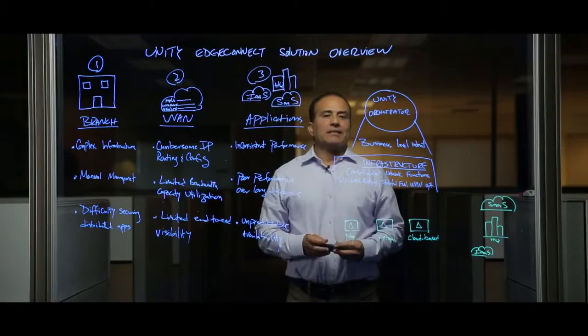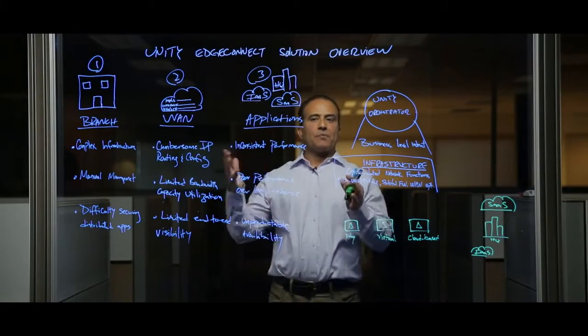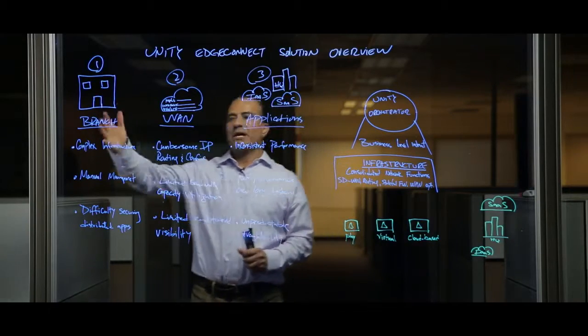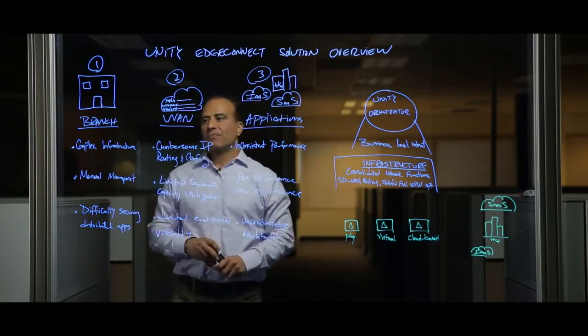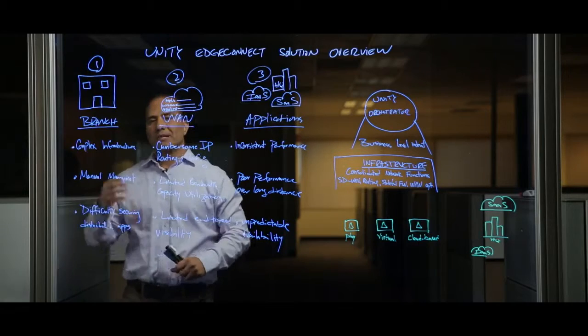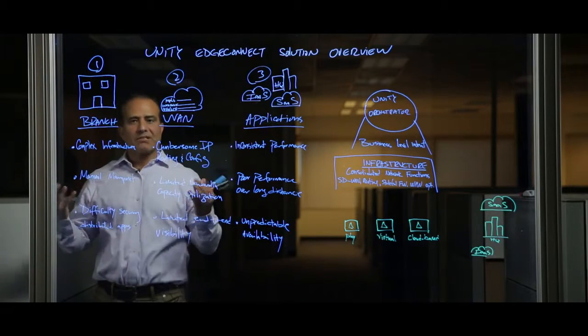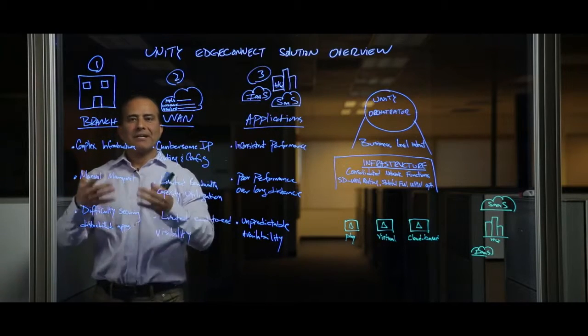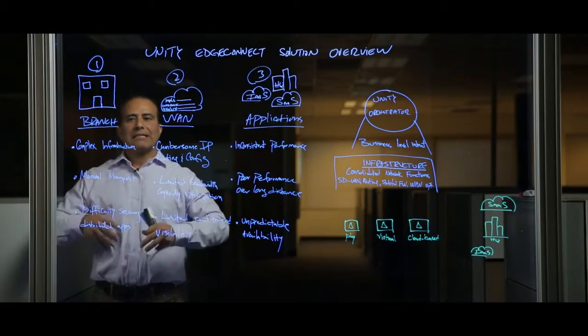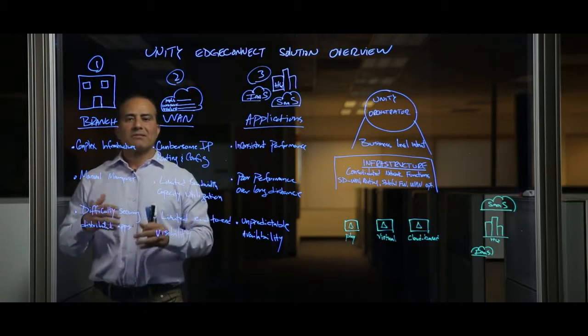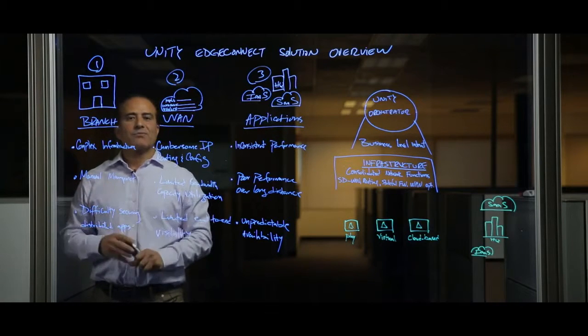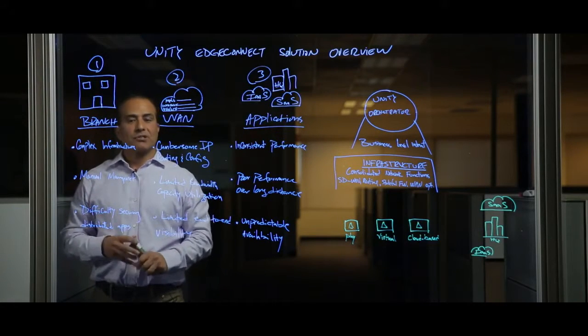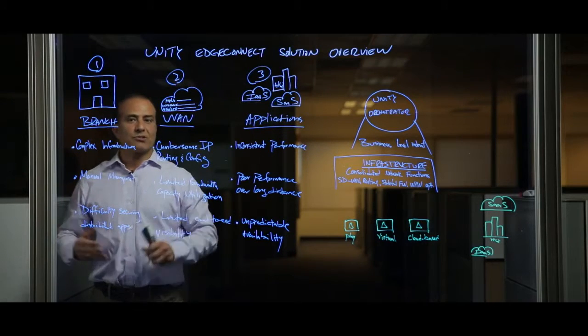Now that created many challenges, and the challenges it created is in three buckets: the branch, the WAN, and the applications. On the branch side, we've seen more complexity in the infrastructure because customers are trying to add more capabilities into their router that did not result in the outcome they're looking for. The process has still been manual, still complex, and it's not easy for them to stitch services, secure services, and apply them to these distributed applications.